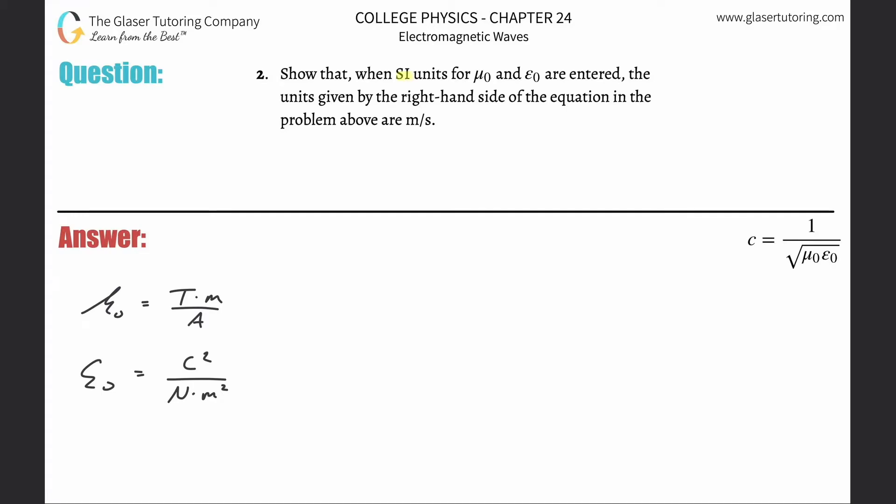Number two: Show that when SI units for μ₀ and ε₀ are entered, the units given by the right hand side of the equation in the problem are meters per second. So basically using this equation, let's show that the speed of light equals meters per second.